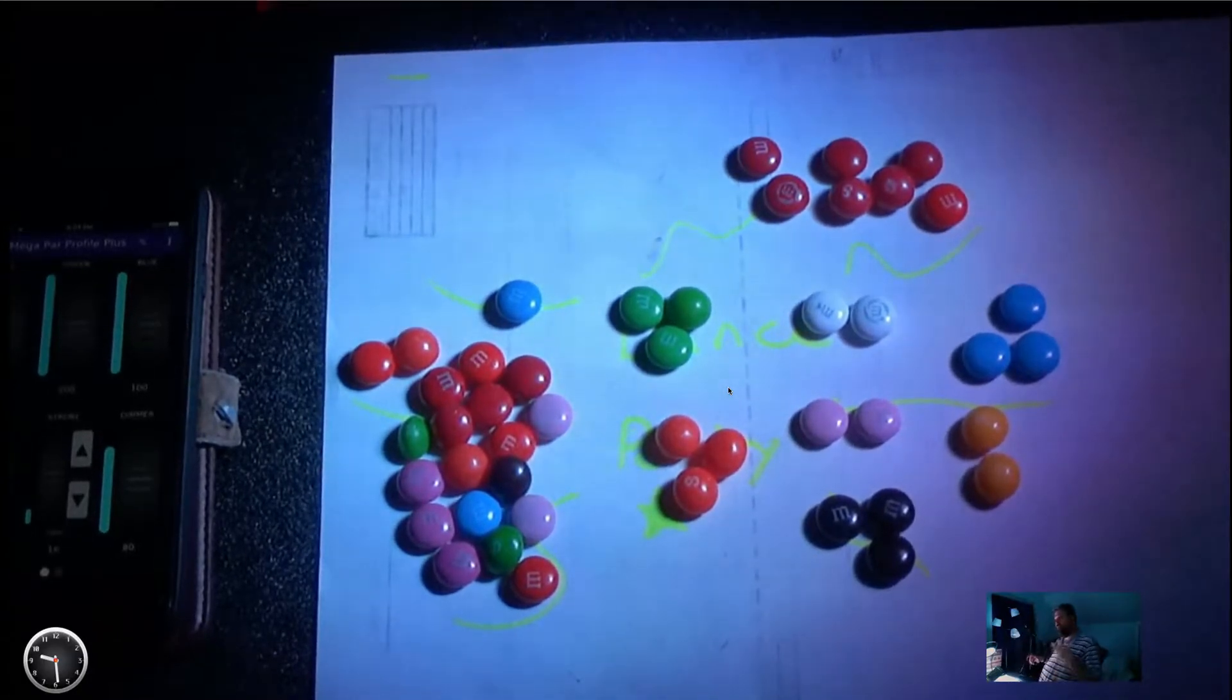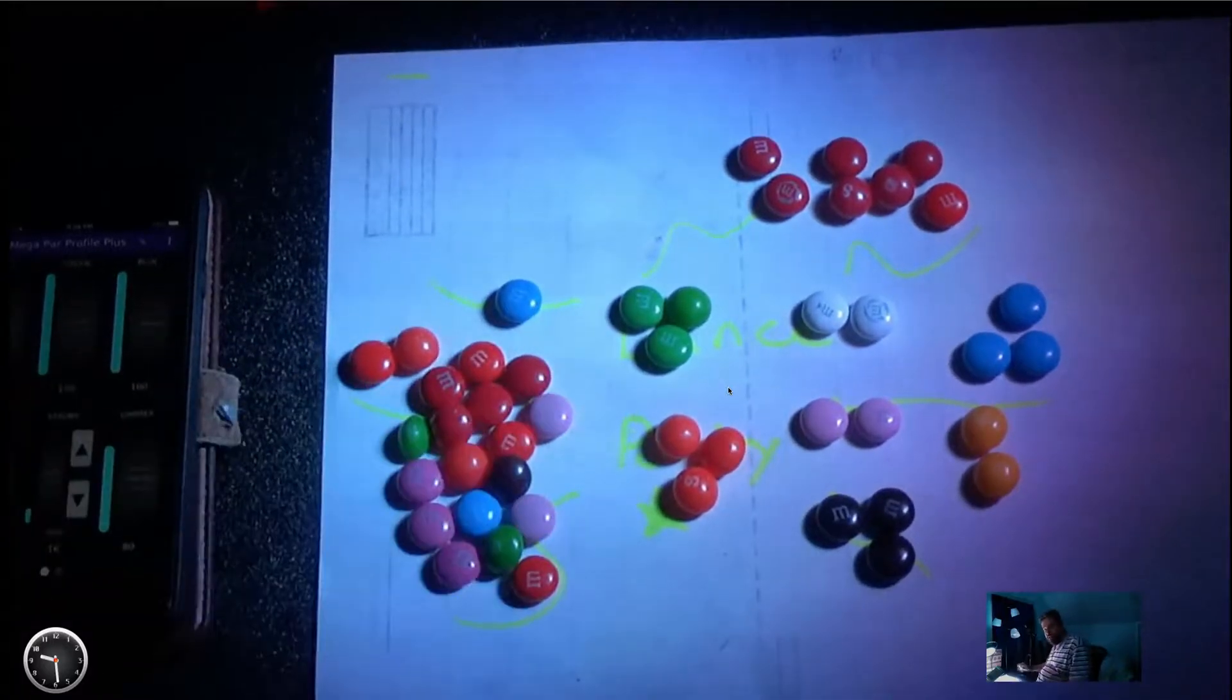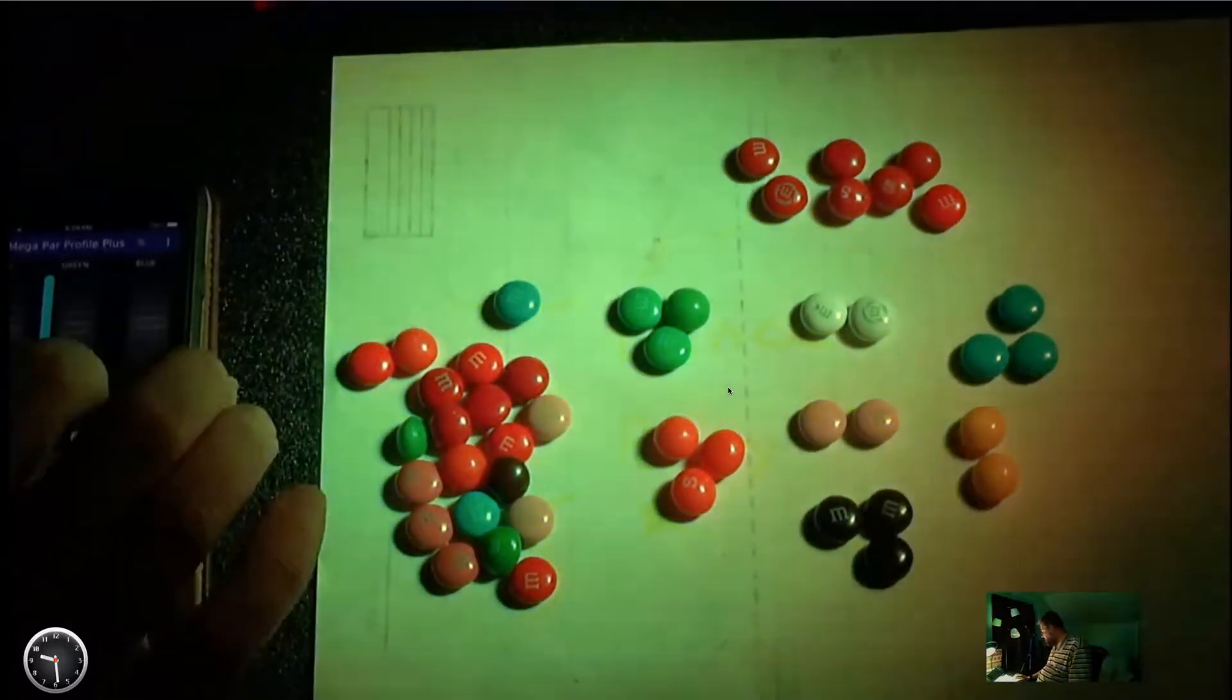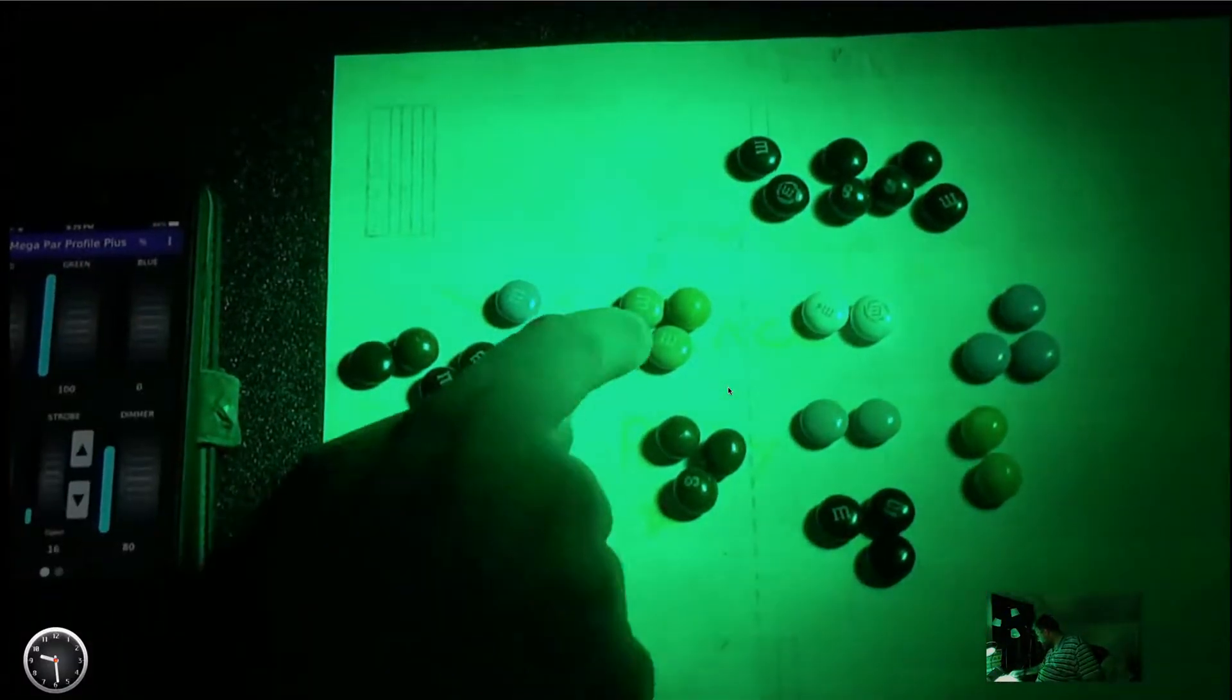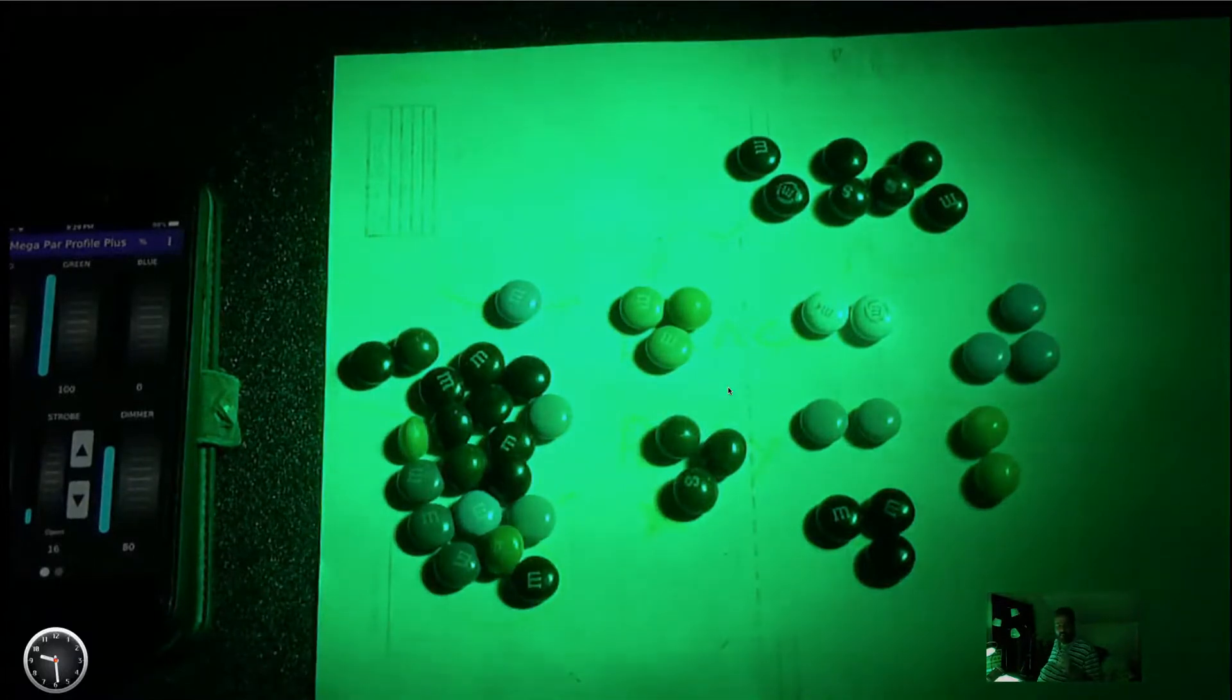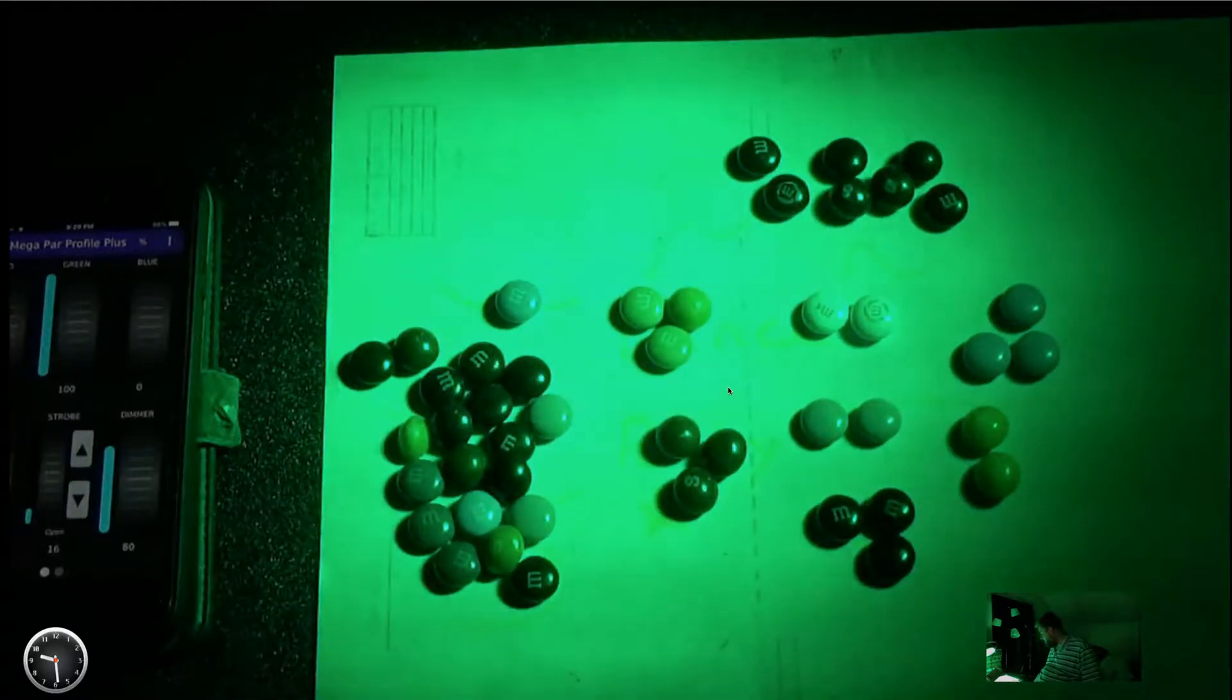So if we just turn the blue on, the ones that have blue in them are going to show up because you have to have that color in the thing that you're shining it on. So let's just look at green. Okay. So we turn everything off the green. We can still see the green. I think that blue has a little bit of green in it. That's why they're showing up. Again, we have the white M&Ms for reference.